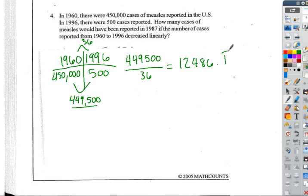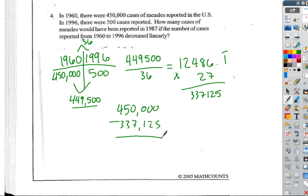And so, now that we have that, we can find how many years was between 1960 and 1987, which was 27 years, and multiply that by our per year value, and you will get 112,875. Oh, wait, no, you'll get, oopsie, get 337,125, and then you subtract that from 450,000. That was our starting value. And then you get 112,875.